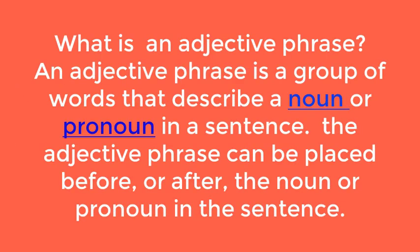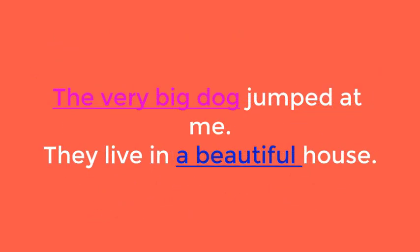What is an adjective phrase? An adjective phrase is a group of words that describe a noun or pronoun in the sentence. The adjective phrase can be placed before or after the noun or pronoun. Examples: 'The very big dog jumped at me.' 'They lived in a beautiful house.'